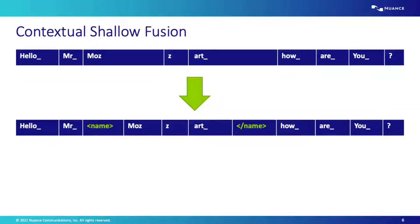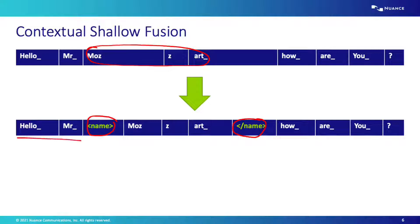In both contextual shallow fusion and contextual density ratio, during training we search the transcriptions of the training utterances for named entities. Whenever we find a named entity, we enclose it between open and close named entity tags — like in this example where Mozart is a name. The end-to-end system then learns from context when these named entity tags are coming.